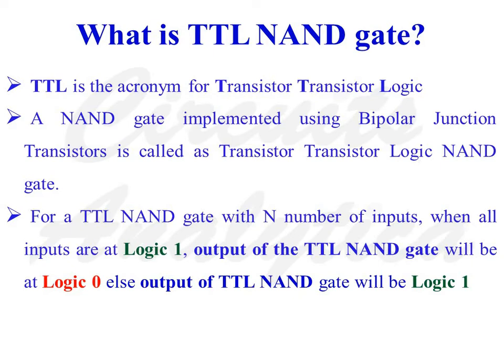For a TTL NAND gate with N number of inputs, when all the N inputs are at logic 1, the output will be at logic 0. Else, the output will be at logic 1. In our discussion, we are considering a two-input TTL NAND gate. The two inputs are A and B, and the output is denoted as Z. When A is equal to B is equal to 1, Z is equal to 0. Else, Z is equal to 1.